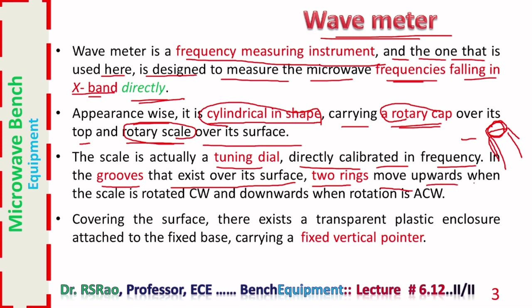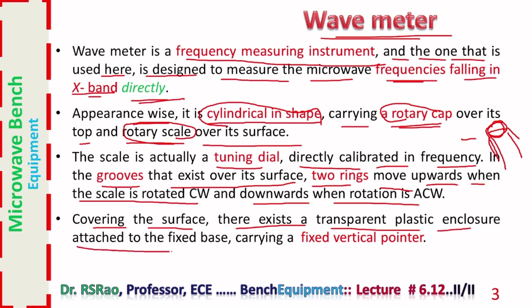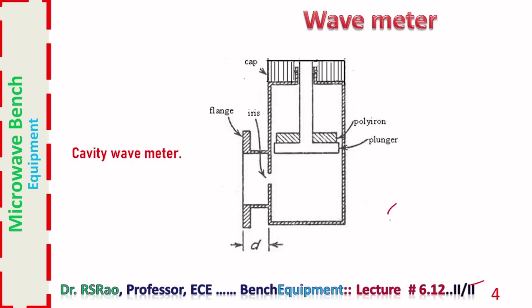Two rings move upwards when the scale is rotated clockwise and downwards when rotation is anti-clockwise. There exists a transparent plastic enclosure attached to the fixed base carrying a fixed vertical pointer. Here is shown a diagram illustrating the basic features of a cavity wave meter. This is the cavity — here is a plunger. By moving the plunger up and down, the volume of the cavity can be varied and hence its resonant frequency is also varied.